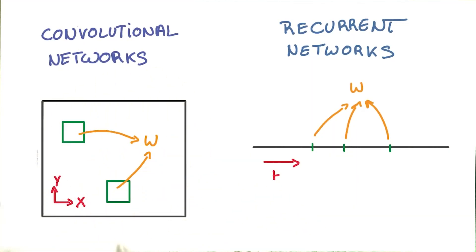You've already seen how a convolutional network uses shared parameters across space to extract patterns over an image. Now you're going to do the same thing, but over time instead of space. This is the idea behind recurrent neural networks.